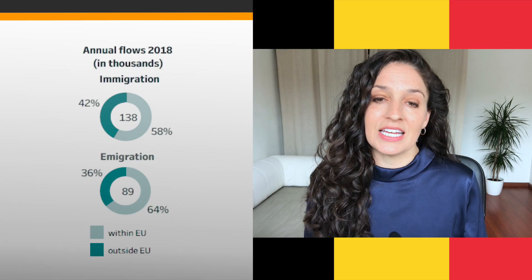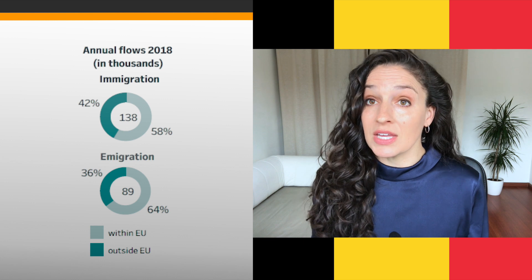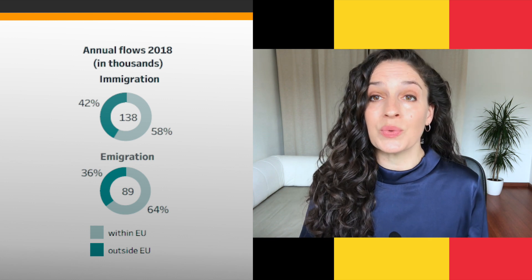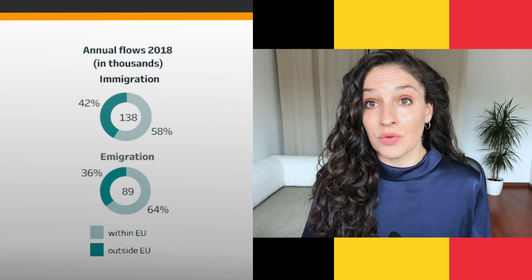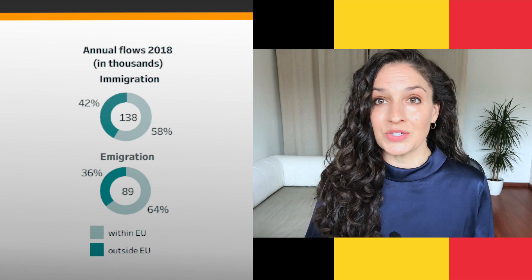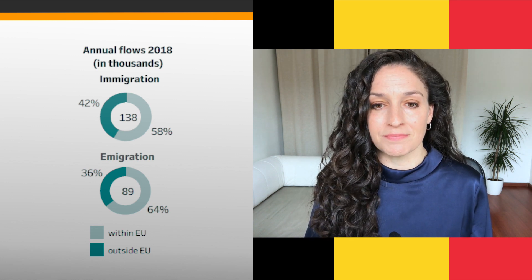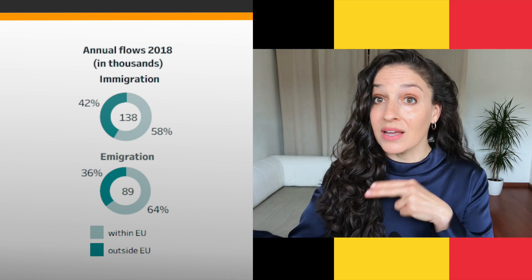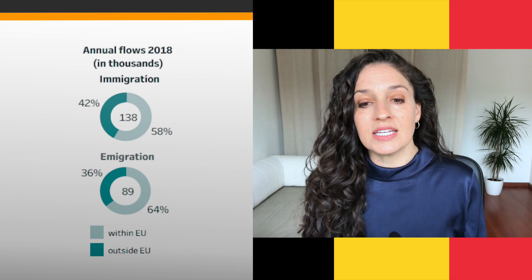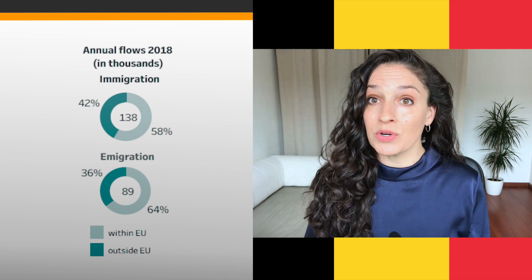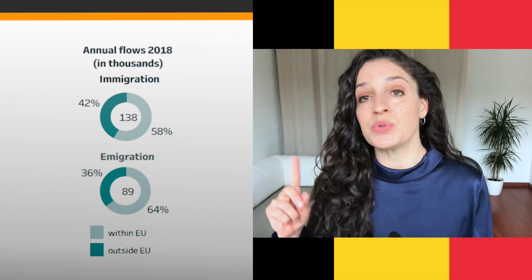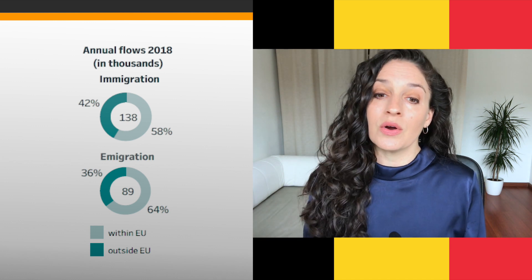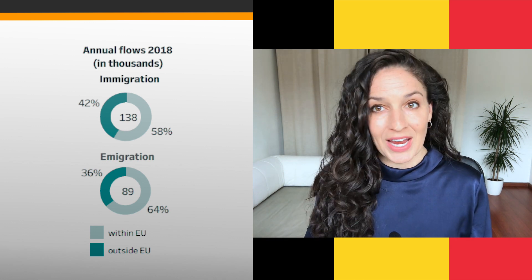Looking at immigration — people coming into the country — in 2018 around 58 percent of immigrants came from the European Union, while only 42 percent were from countries outside of the EU. If we look at emigration, or people leaving Belgium, around 64 percent went to another European country, while only 36 percent went to a country outside of the European Union.